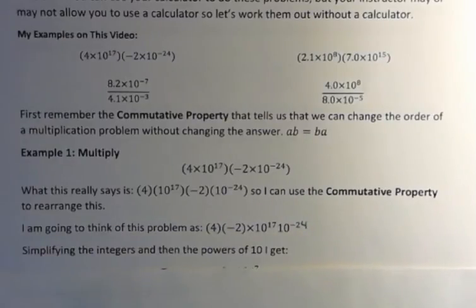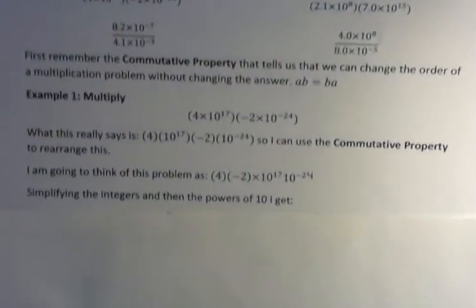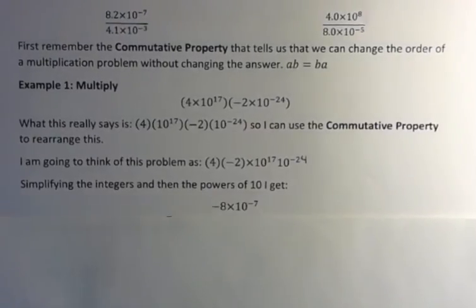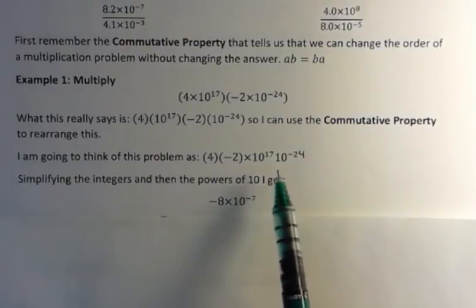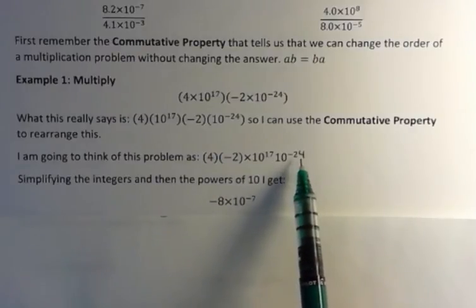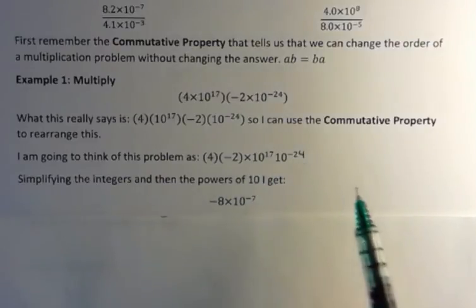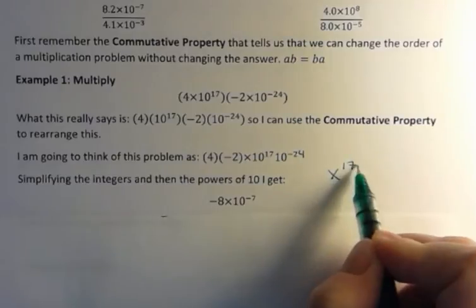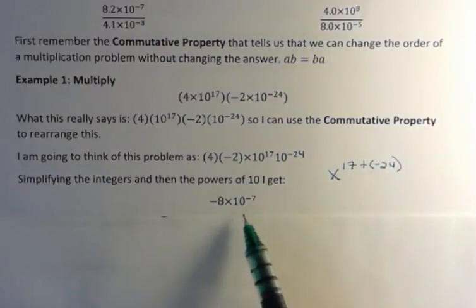I can simplify the integers and then the powers of 10. What you're going to get is 4 times negative 2, which is negative 8, and then 10 to the 17th times 10 to the negative 24th. When you have the same base and you have powers, you add them together. So I'm going to say 17 plus negative 24, and that's how I get negative 7.